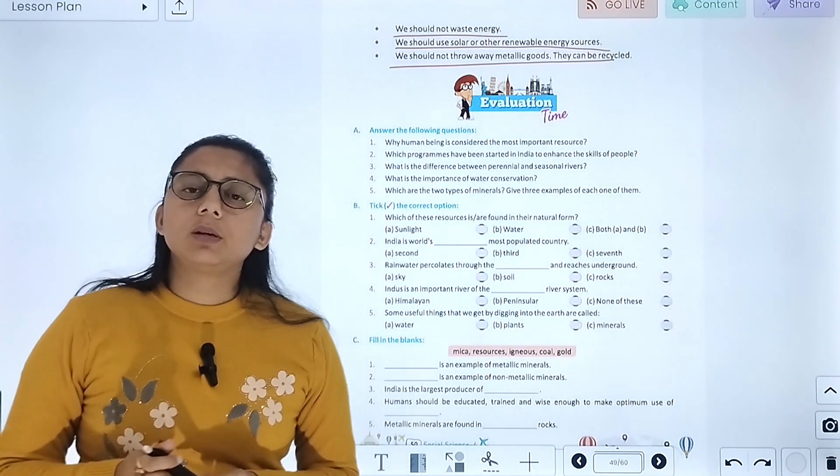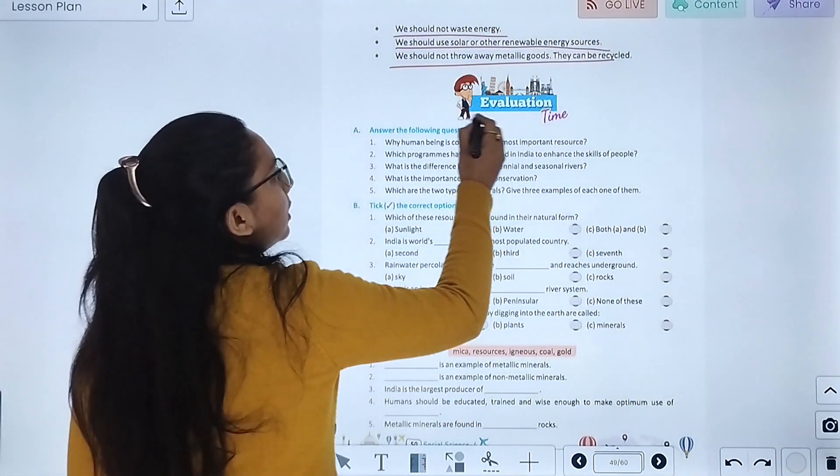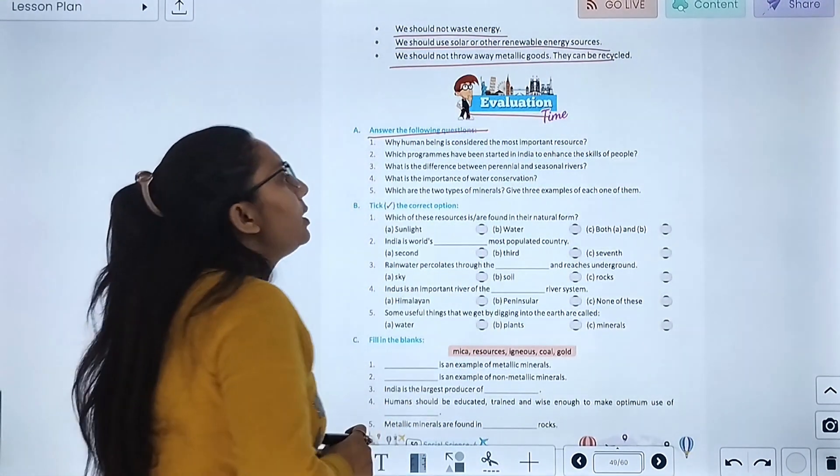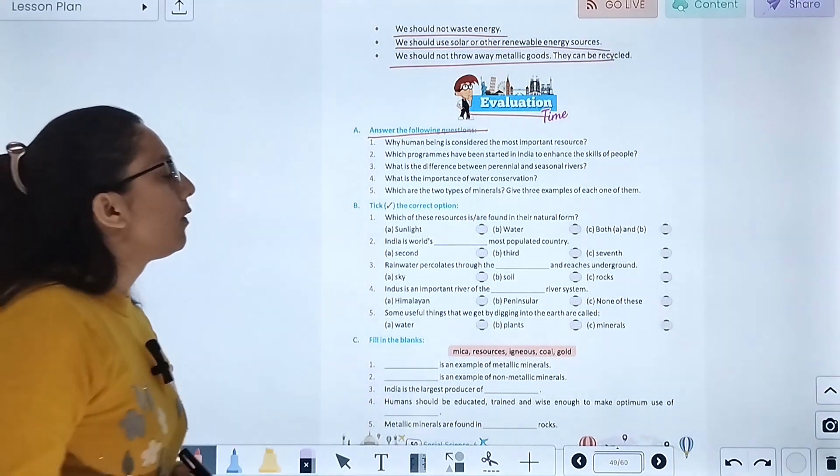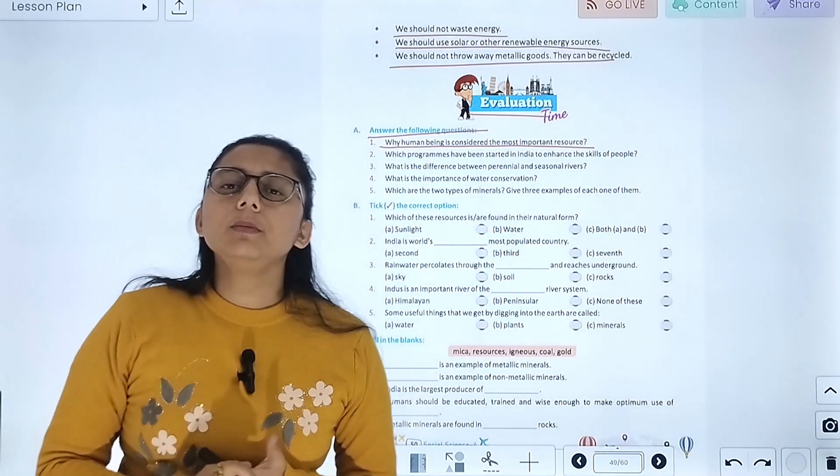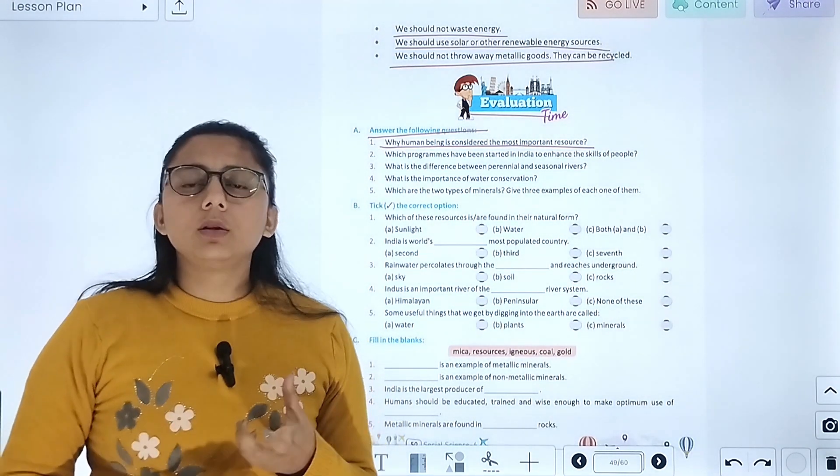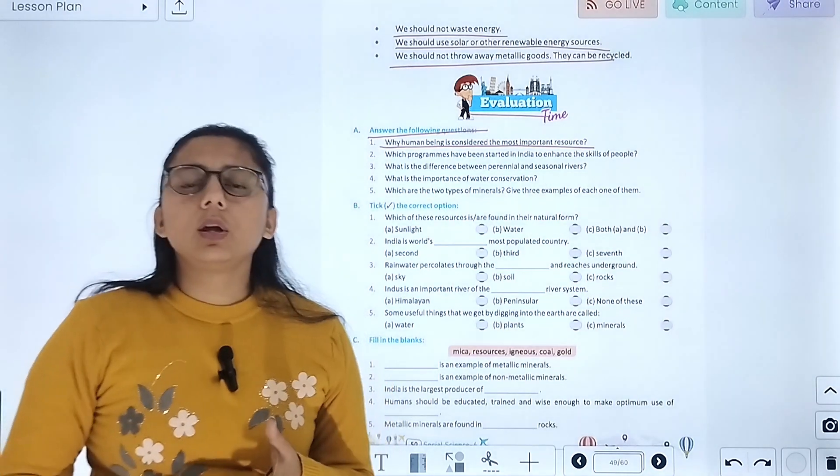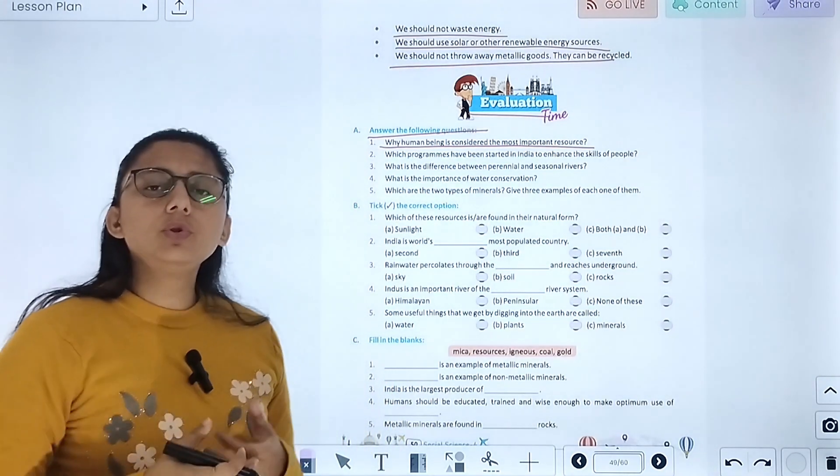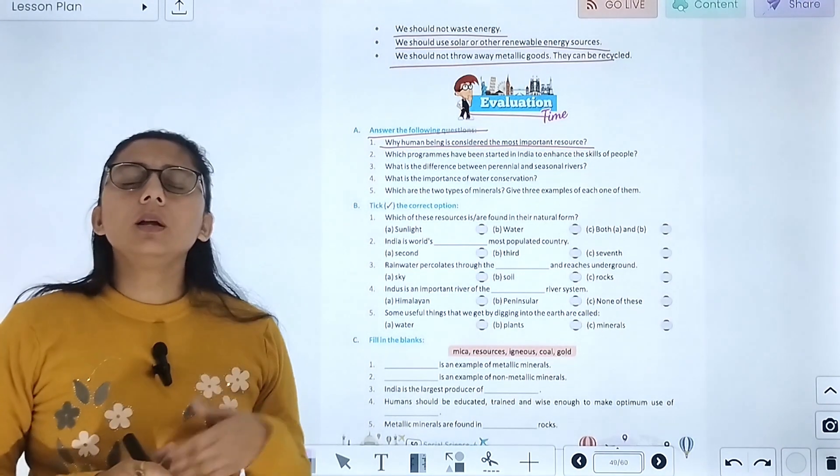That's all. The chapter is complete. Now let's start with the exercise of the chapter. Evaluation time, answer the following questions. First question is: why are human beings considered the most important resource? Because human beings use those resources and minerals to produce new things and materials.